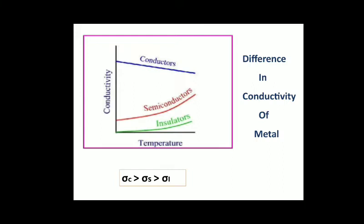Regarding differences in conductivity of metals: some metals are very good conductors while some are very bad conductors. Materials are classified into three groups based on their conductivities: conductors, semiconductors, and insulators. Conductivity decreases from conductor to insulator. Sigma_c is conductivity of a conductor (highest), sigma_s is conductivity of a semiconductor (moderate), and sigma_i is conductivity of an insulator (very low). As temperature increases, conductors lose conductivity, insulators increase slightly, but semiconductors show a very good increase in conductivity—based on band theory.